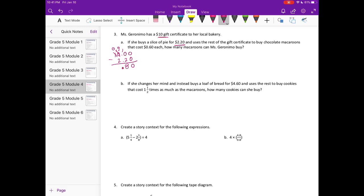Ten minus two is eight, bring my decimal point down, nine minus two is seven. So she has seven dollars and eighty cents left to buy chocolate macaroons, and they each cost sixty cents. So she's going to take that seven dollars and eighty cents and see how many sixty cent macaroons she can buy. That would be equal to... I'm going to multiply by ten to make them whole numbers, so we have 78 over 6. If we do 78 divided by 6: six goes into seven one time, one times six is six, subtract, bring down. Six goes into 18 three times, so she can buy 13 macaroons.